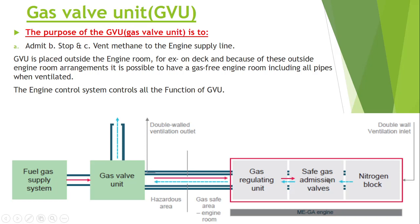After the whole system is shut down, the nitrogen block is there — the nitrogen purges the line and it exits from the Gas Valve Unit. So if in the exam they ask you what is the purpose of a Gas Valve Unit, the answer is: the purpose of the Gas Valve Unit is to admit, stop, and vent the methane to the engine supply line. So it admits the required amount of methane, stops it, and also helps to purge the system — three purposes: admit, stop, and vent.